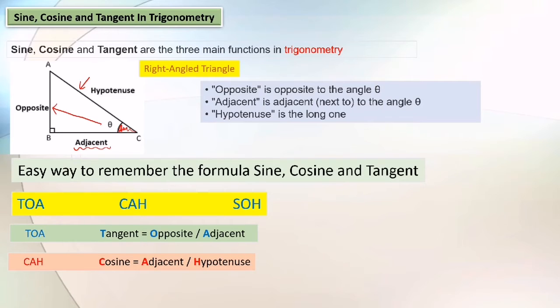So we start with TOAKASO. TOA: tangent equals opposite side over adjacent side. KA: cosine equals adjacent over hypotenuse. SO: sine equals opposite over hypotenuse.